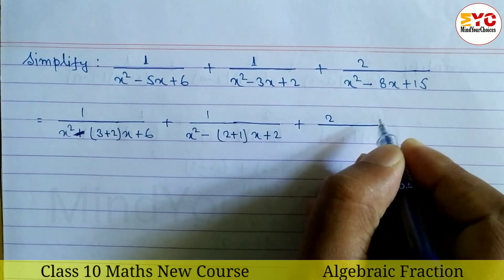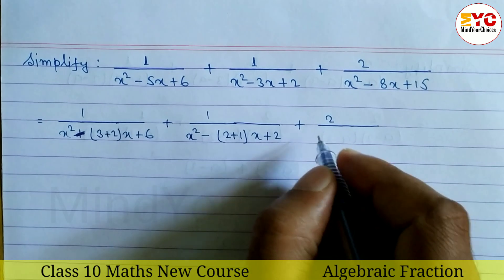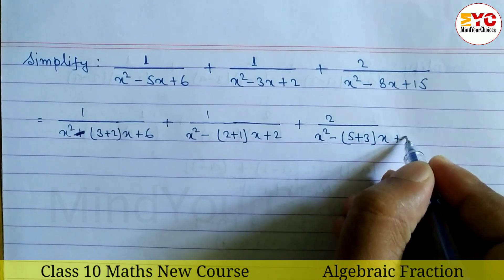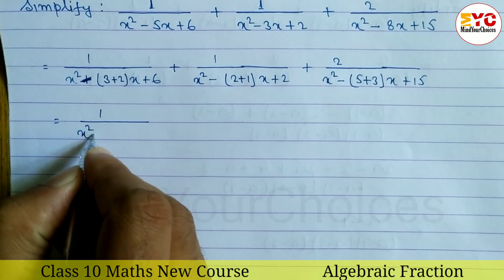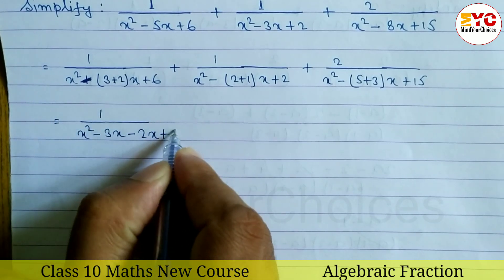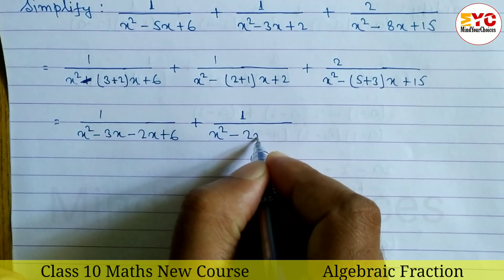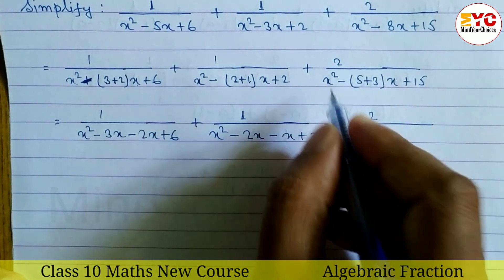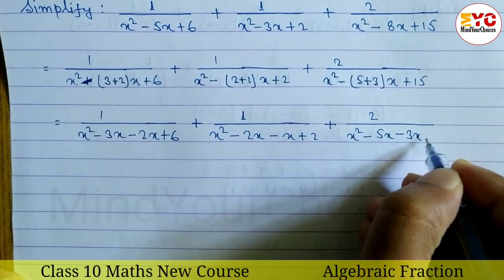Plus 1 divided by (x² − 3x + 2): multiply 2 and add 3 — we can write 2 plus 1. Plus 2 divided by (x² − 8x + 15): multiply 15 and add 8 — so 5 times 3 is 15 and 5 plus 3 is 8. So x² − 8x + 15 splits using 5 and 3.